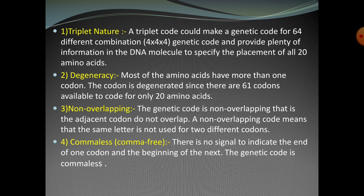The third characteristic is non-overlapping. Genetic codons are non-overlapping, meaning adjacent codons do not overlap each other — the same nucleotide is not shared by two different codons. The fourth characteristic is comma-less: there is no signal to indicate the end of one codon and the beginning of the next. The genetic code is continuous and comma-free in form.